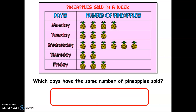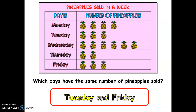Next, which days have the same number of pineapples sold? Let's see which days have the same numbers. On Monday we have four, Tuesday we have three, Wednesday we have six, Thursday we have two, and Friday we also have three. So the answer is Tuesday and Friday.